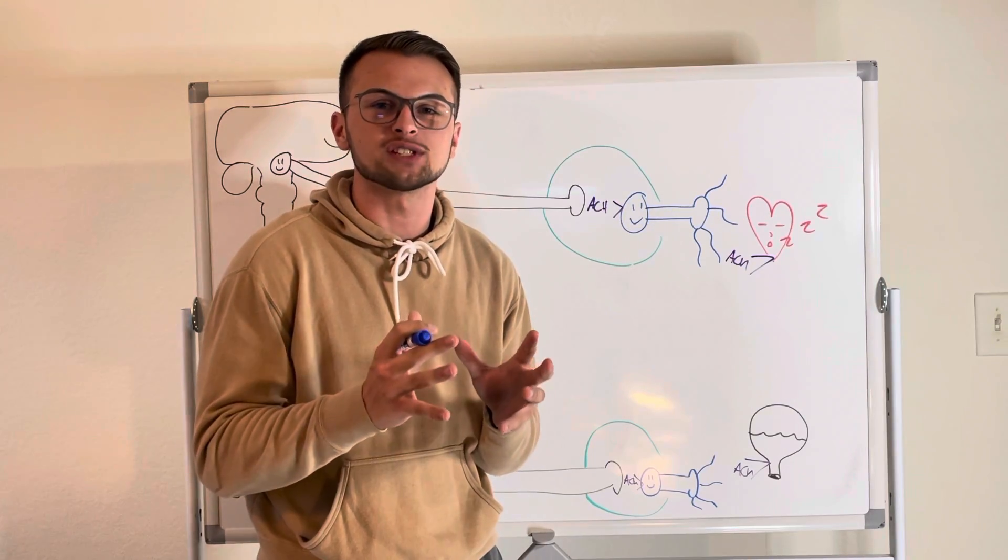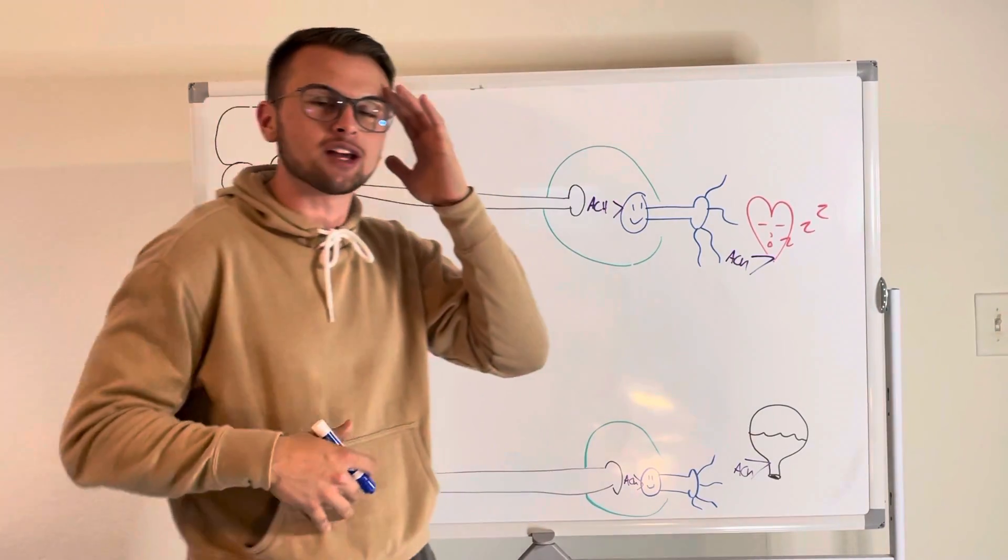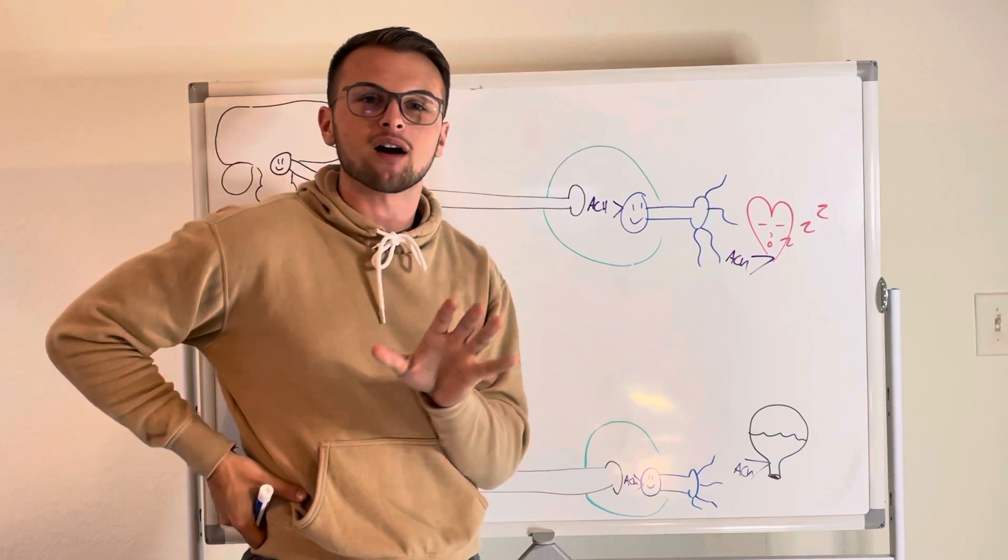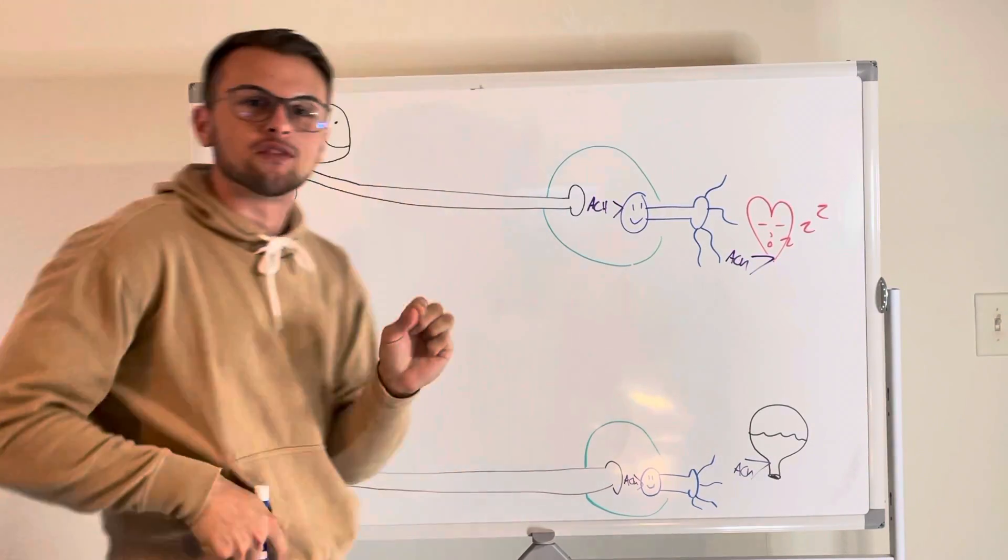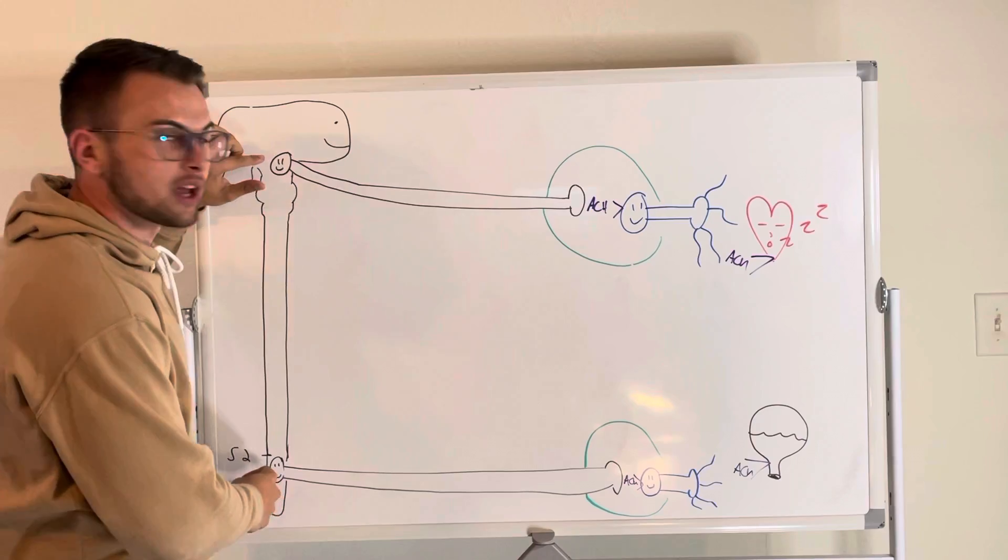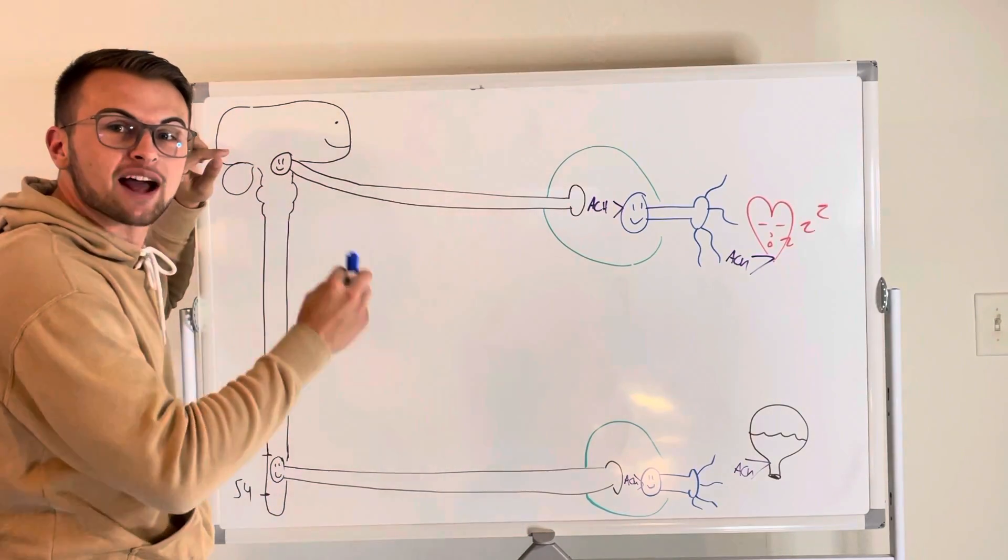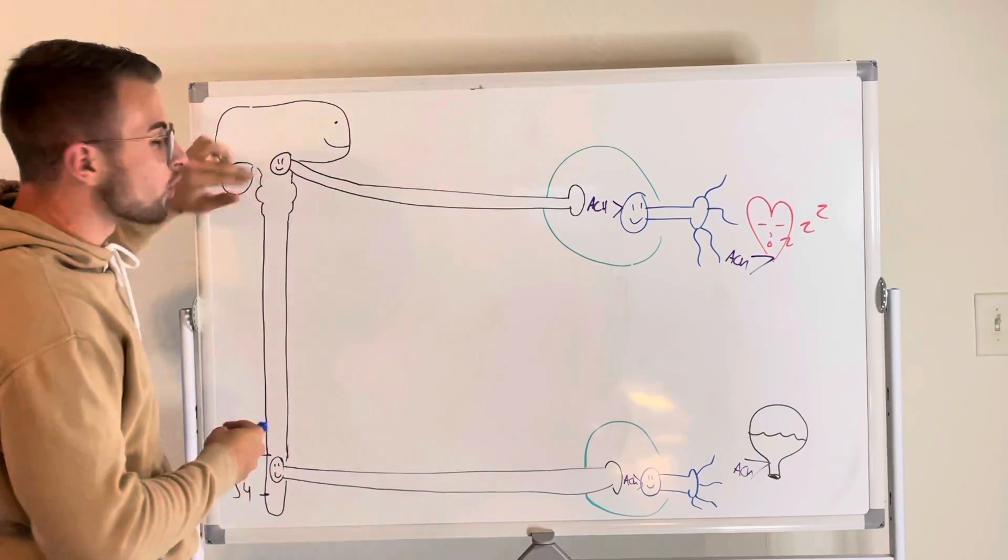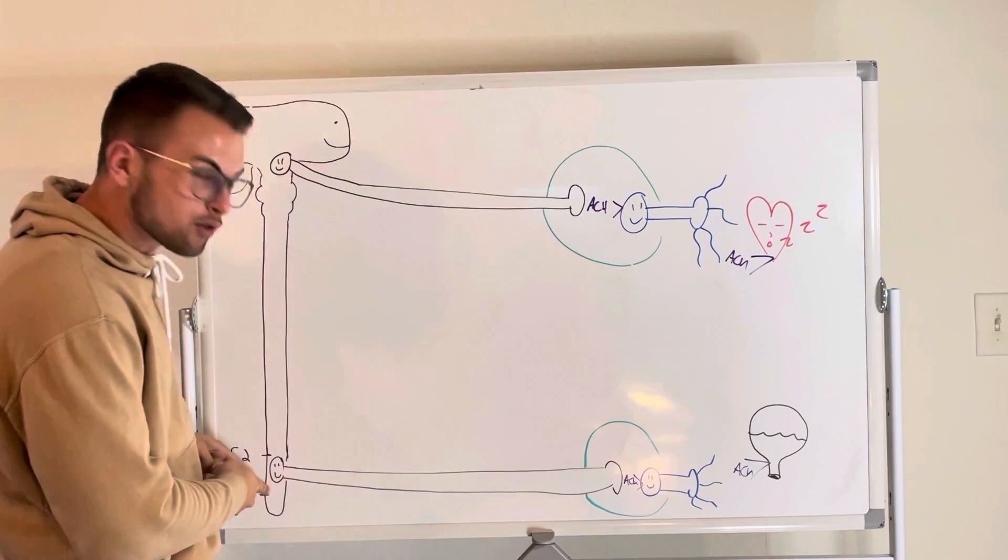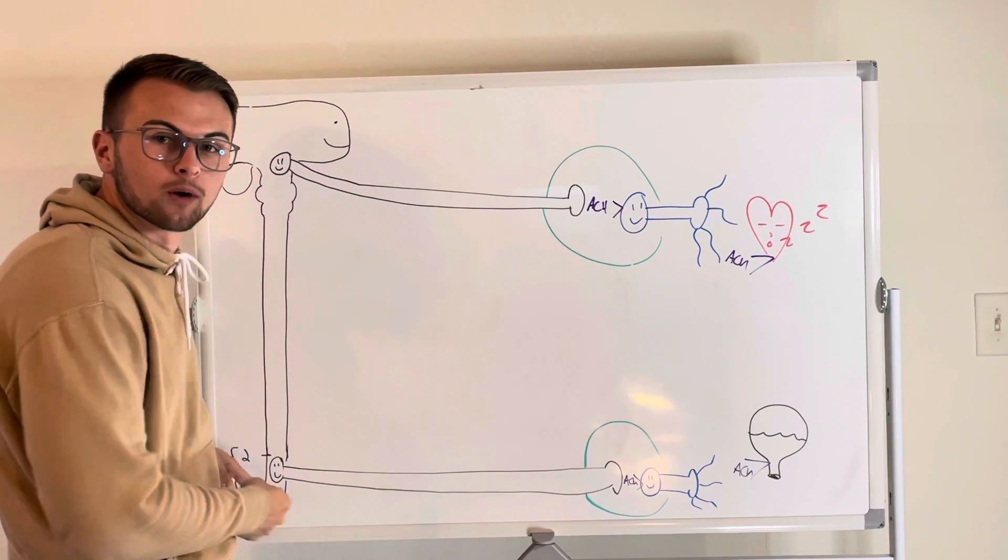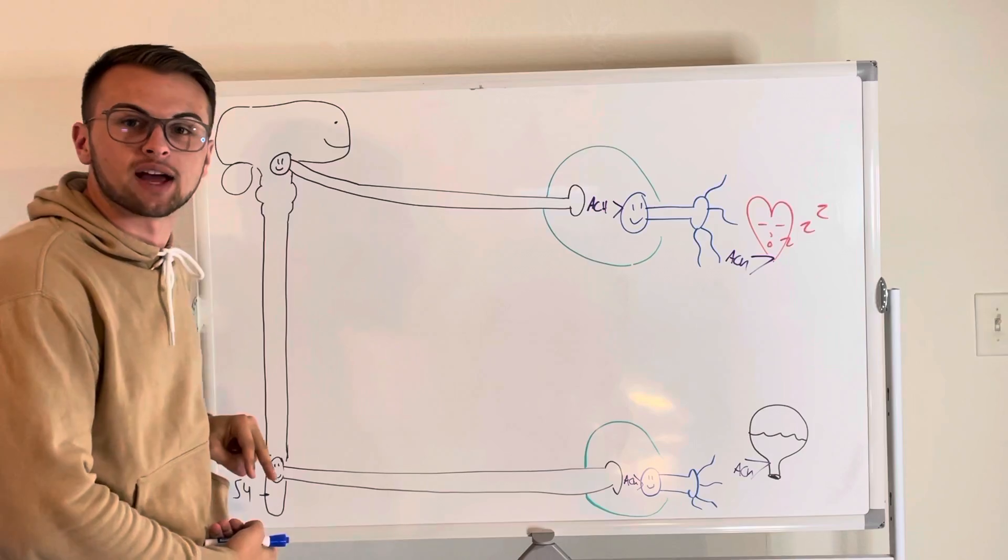So the parasympathetic nervous system has been called the craniosacral system because the cell bodies of the preganglionic neurons, which are located here in black, are actually in the cranial nerves and the sacral segment of the spinal cord, specifically S2 to S4.